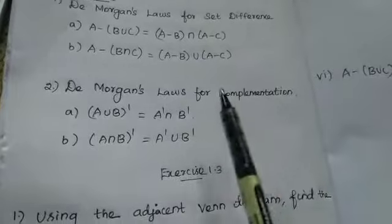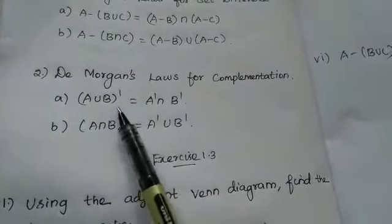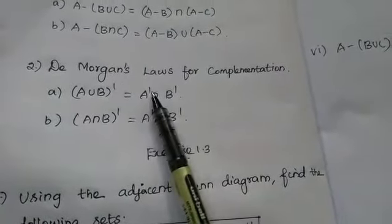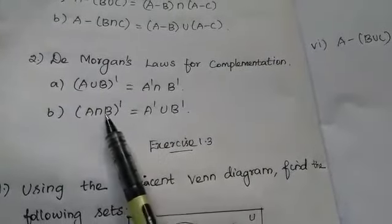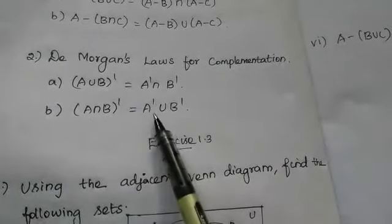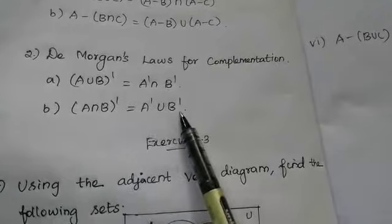The next one is De Morgan's law for complementation. (A union B) the whole dash equals A dash intersection B dash. Next, (A intersection B) the whole dash equals A dash union B dash.